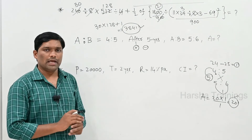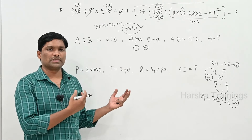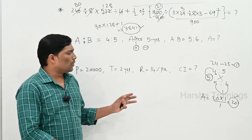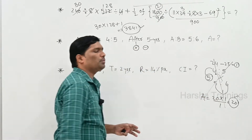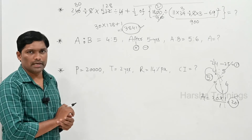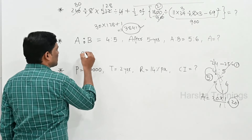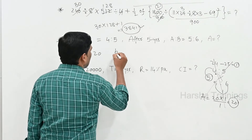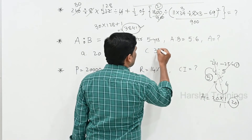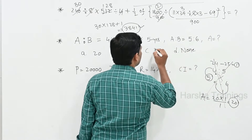So A's age is 20 years — this is the shortcut method. The basic method takes longer to solve. Without pen, we solve using option verification. For example: first option 20 years, second option 25 years, third option 30 years, fourth option none of these.